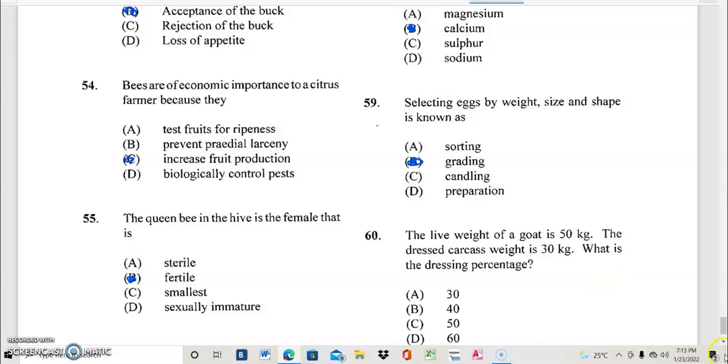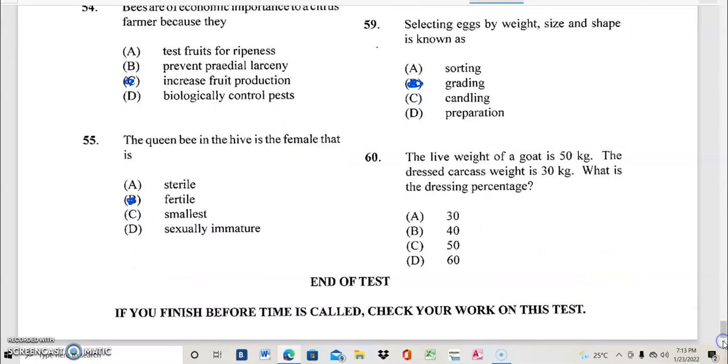Question 60. This is our final question for this paper. The live weight of a goat is 50 kg. The dressed carcass weight is 30 kg. What is the dressing percentage? And if your answer to question 60 is D, 60%, you are very correct.